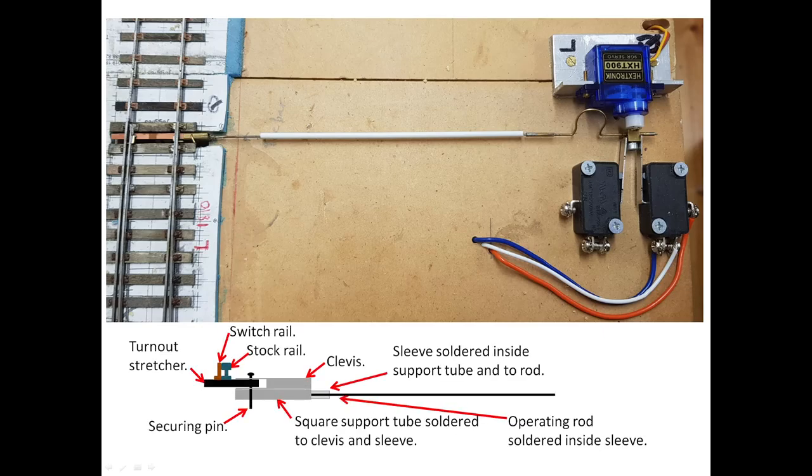This is the homemade setup that I use for connecting the operating rod to the stretcher. As you can see, there's no possibility of adjusting the length of the operating rod at this end, but it can be disconnected if necessary. A sleeve is soldered onto the end of the operating rod and into a short length of square brass tube. The square tube is soldered to a homemade clevis fabricated from a similar length of brass tube. This is attached to the stretcher bar by a cut down 0.75mm lace makers pin. If you cut the pin in half, you can use the other half in another unit. The pin passes through the clevis, the stretcher and the support tube. Hence, the operating rod is not permanently fixed to the stretcher.